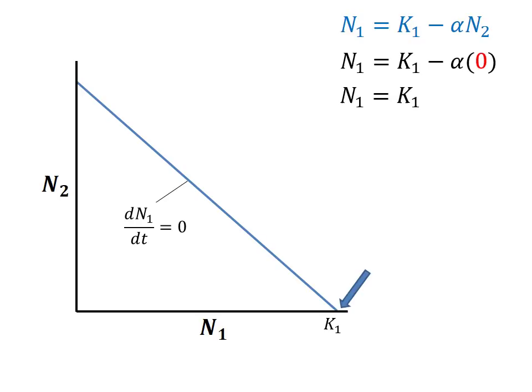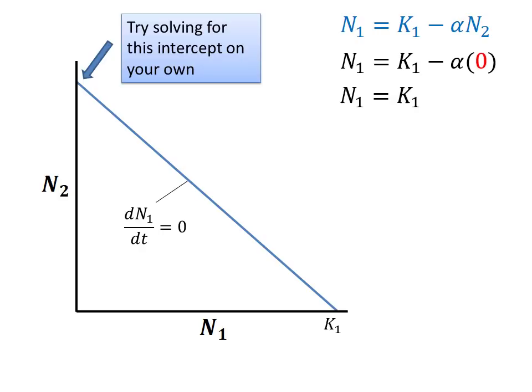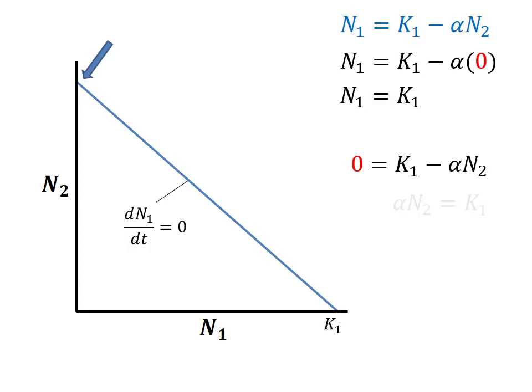What about the other intercept? Why don't you pause this video and see if you can solve this on your own? I'm sure that wasn't too much trouble. Hopefully you plugged in 0 for the n1 population size and proceeded to solve for n2, arriving at k1 over alpha.